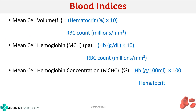We have now seen all three major red cell indices. Here is a memory tip for the formulas: for MCV and MCH, the denominator is RBC count. For MCV, the numerator is hematocrit or PCV; for MCH, the numerator is hemoglobin. The only change is for MCHC, where it is hemoglobin divided by hematocrit, multiplied by 100. Remembering that the denominator for MCV and MCH is RBC count will make it easier.